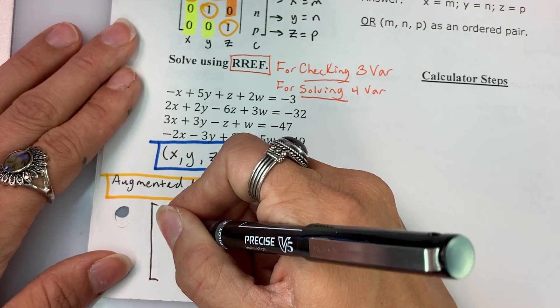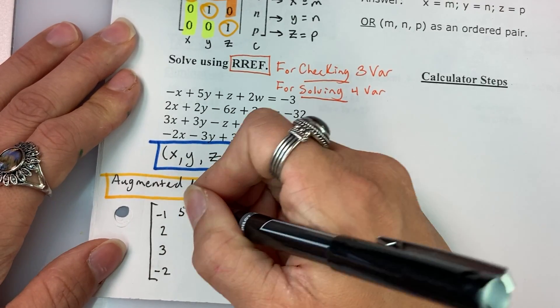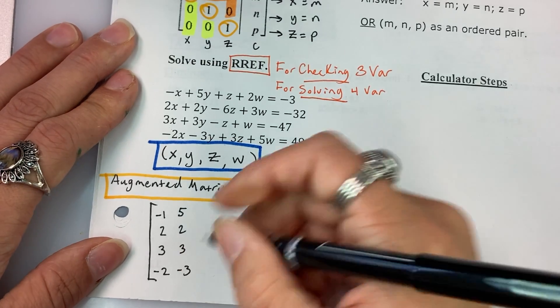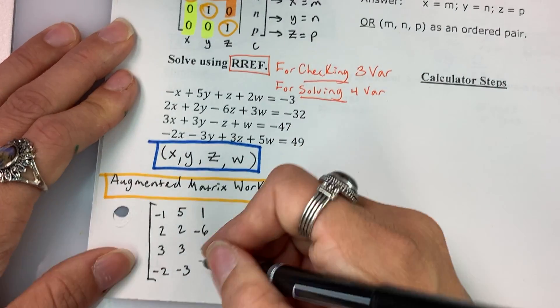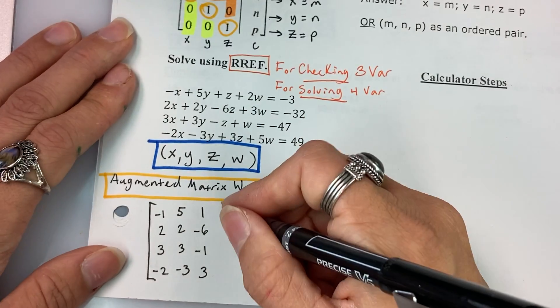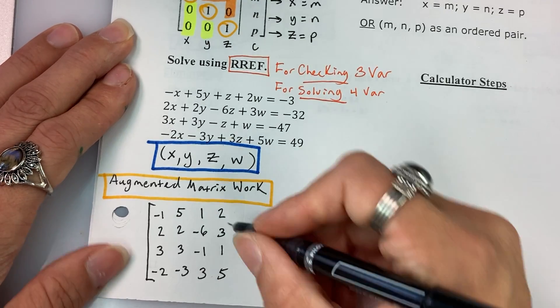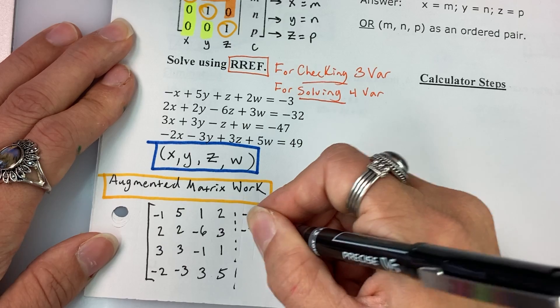So starting with my X stuff, and again, be careful if you need any placeholders of zero for any missing constants. My Z's: one, negative six, negative one, three. My W's: two, three, one, five. And then if you want to do the dashed line and then your constants, you can do so.